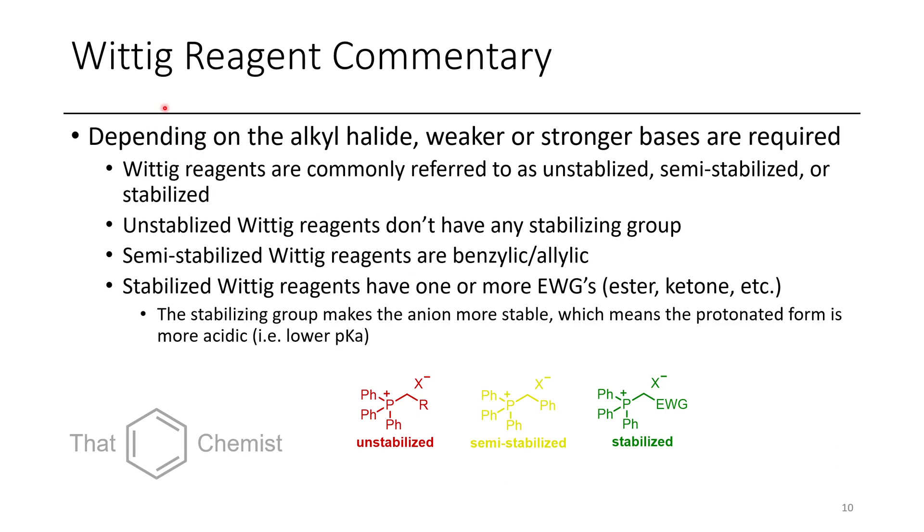So what I wanted to comment on in terms of the Wittig reagent is they're usually unstabilized. So you take something like 1-bromobutane. That quaternary phosphonium salt is unstabilized. There's no electron withdrawing group, which means that the CH2 here is not very acidic. So you have to use a rather strong base. However, if you have a semi-stabilized Wittig reagent, the R group would be something like a benzylic group or an allylic group.